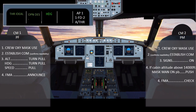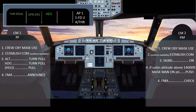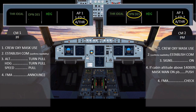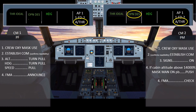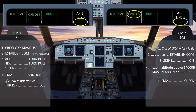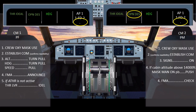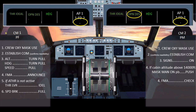The pilot flying reads the FMA to confirm the changes he had made and that the aircraft is established on descent. The pilot monitoring focuses on monitoring the FMA to ensure that the pilot flying had correctly established the aircraft in descent. In case autothrust is not active, the pilot flying brings back the thrust lever to idle.